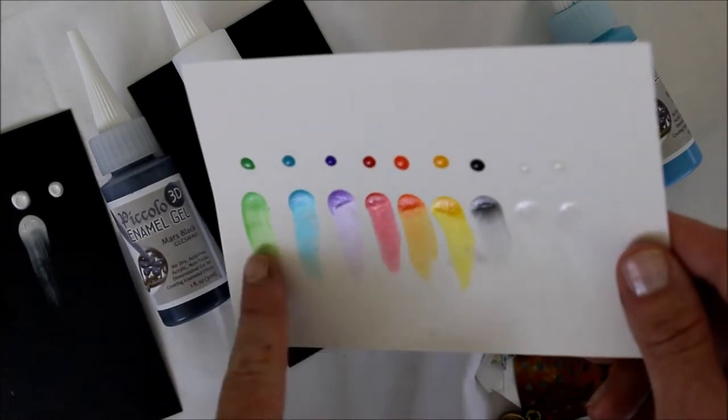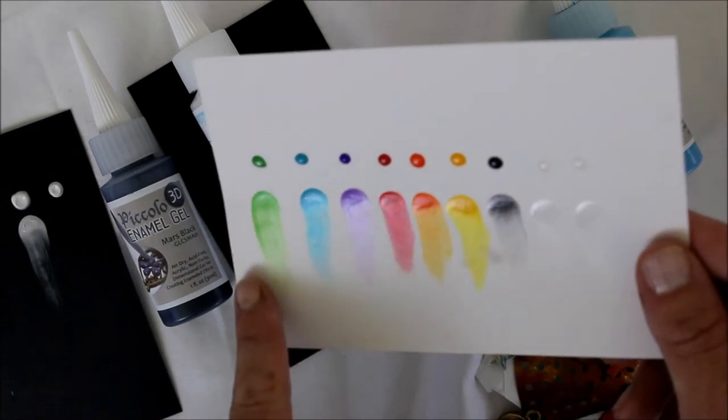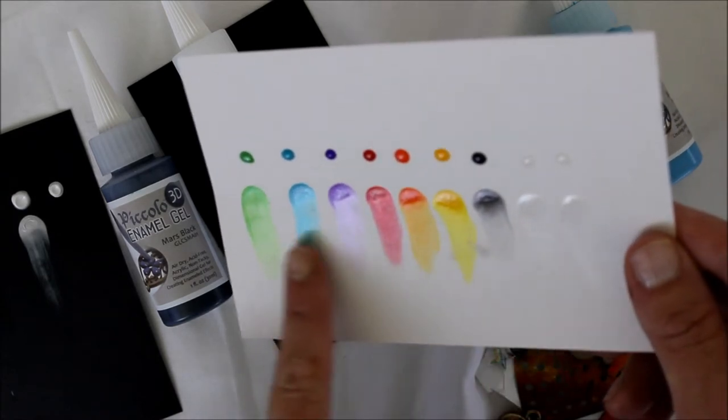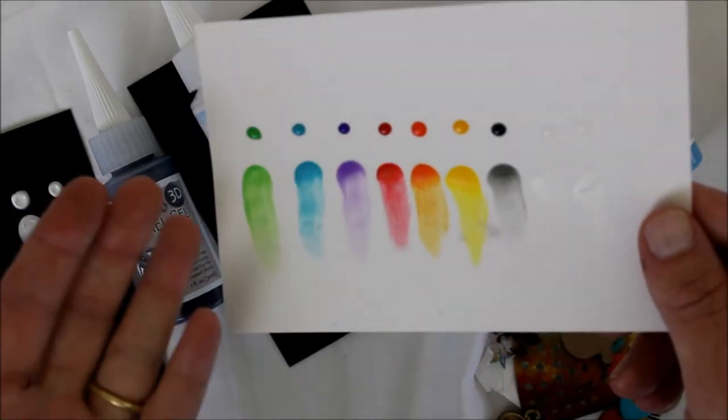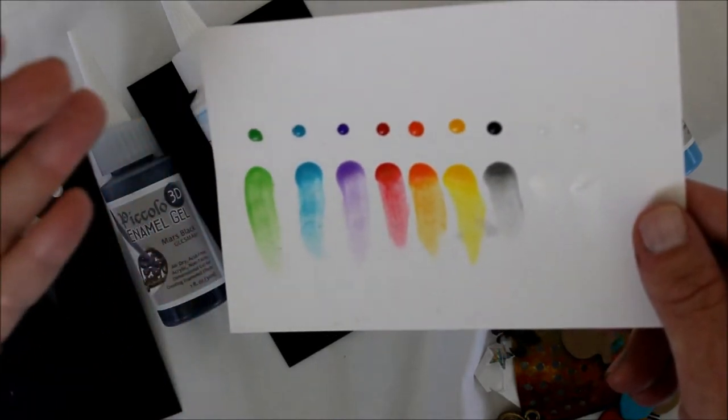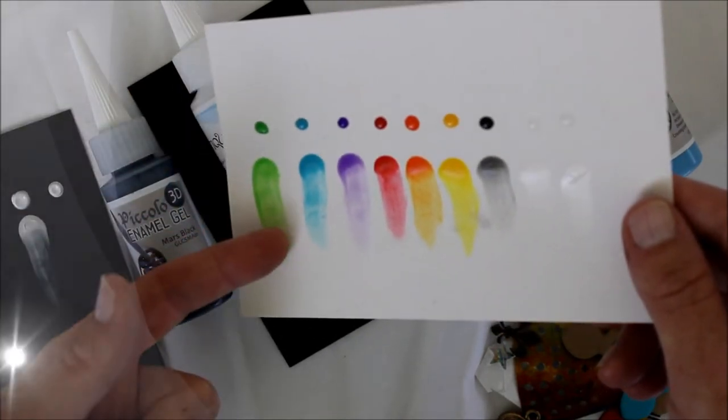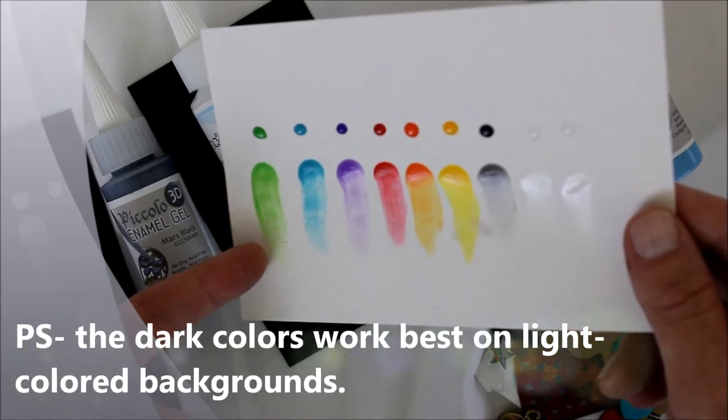I just kind of spread it out with my fingers so you could see how it really is an opaque color. If you spread it out, you can get more translucent effects. If you apply it right from the bottle it's going to be nice and opaque. If you apply it with a paintbrush, it's going to be more transparent and translucent.